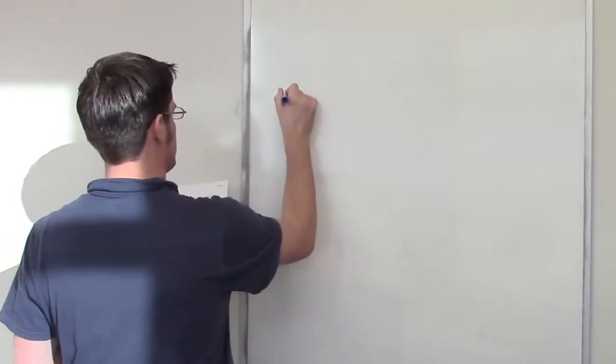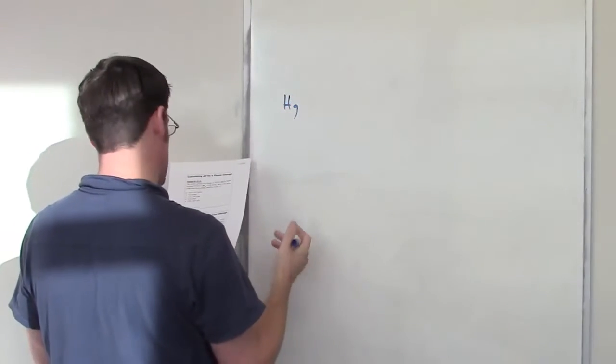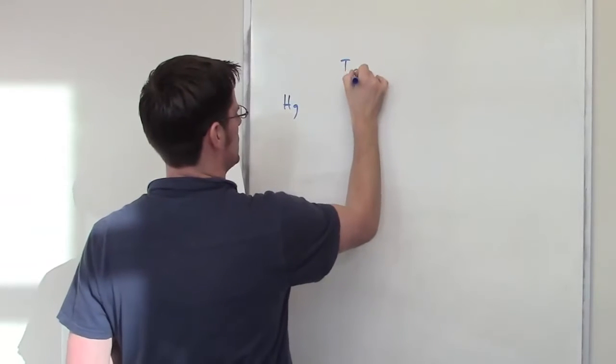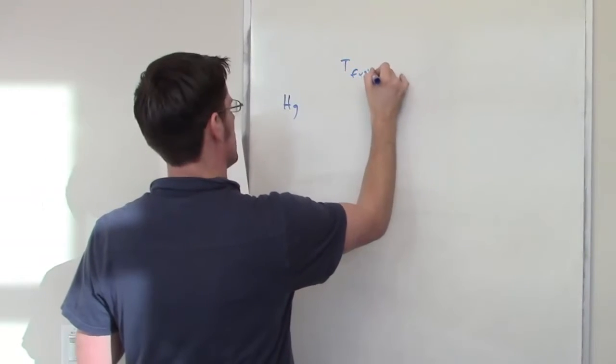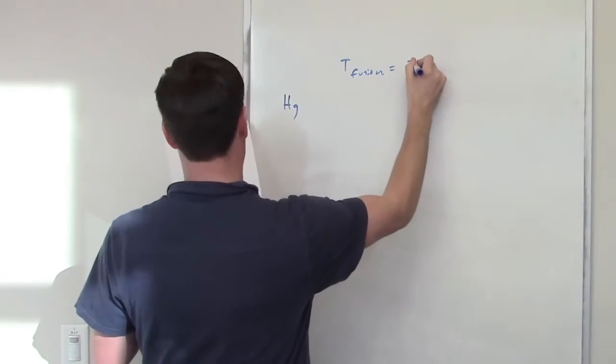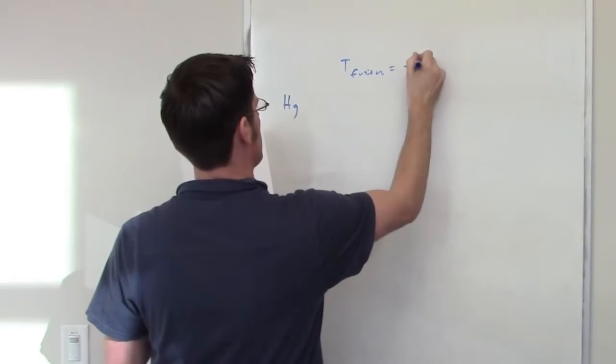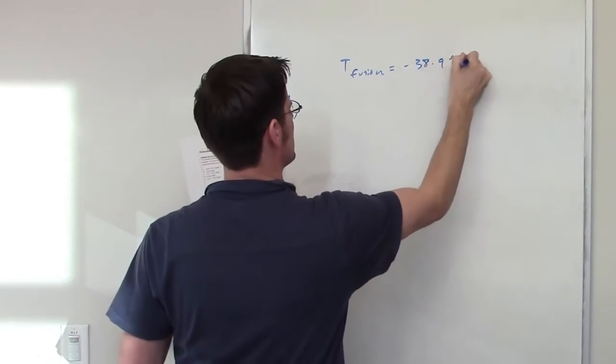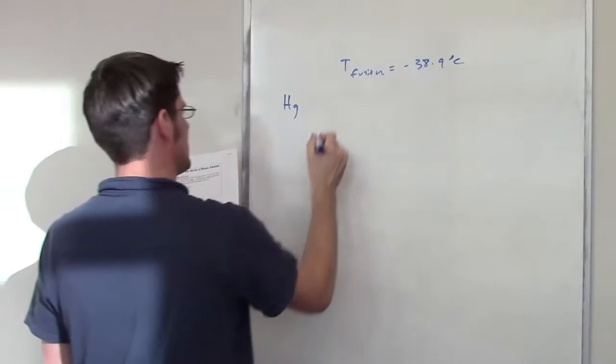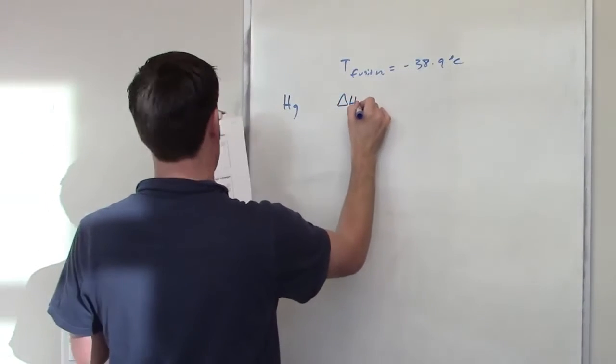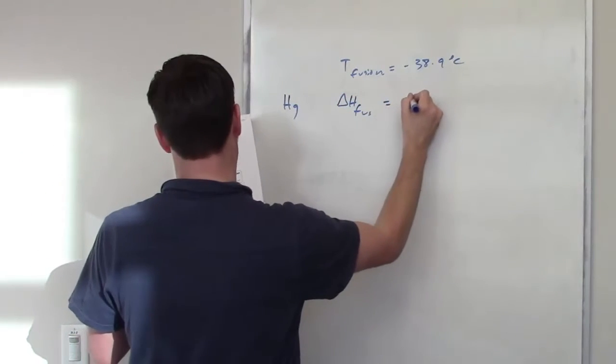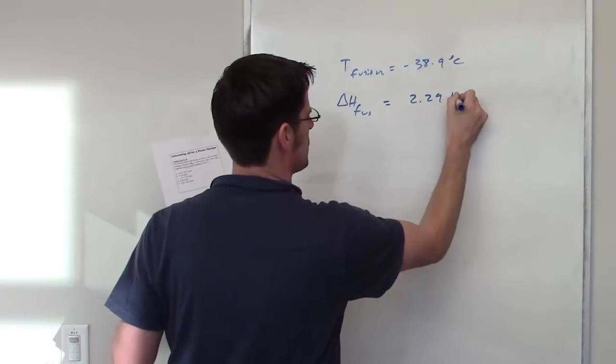I've got mercury, and it gives me its normal freezing point, so I'll write temperature of fusion is equal to, oh hang on, negative 38.9 degrees Celsius. It also gives me its delta H, or change in enthalpy of fusion, as being 2.29 kilojoules per mole.